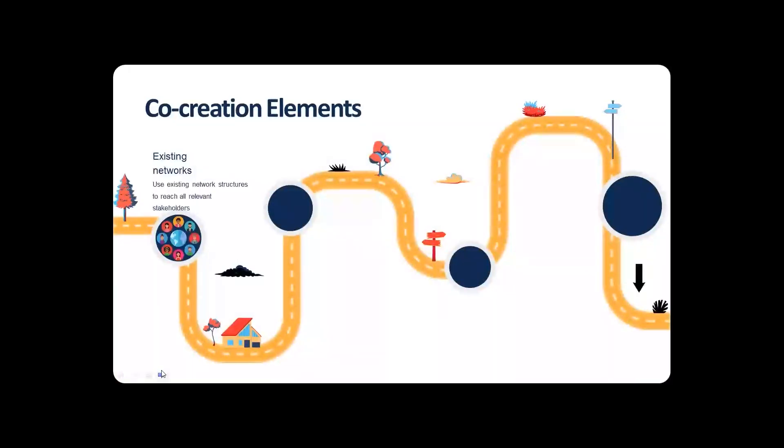What I'm going to show you are four different tips that we found during our co-creation projects. The various elements that help not only policy development, but single measure developments as well. So existing networks are an element that can be identified in the stakeholder mapping, where you talk to your stakeholder groups to see what relations they have and how embedded they are in their local environment, and use these existing network structures to get to stakeholders and to involve them in the first place, but to keep them involved as well.